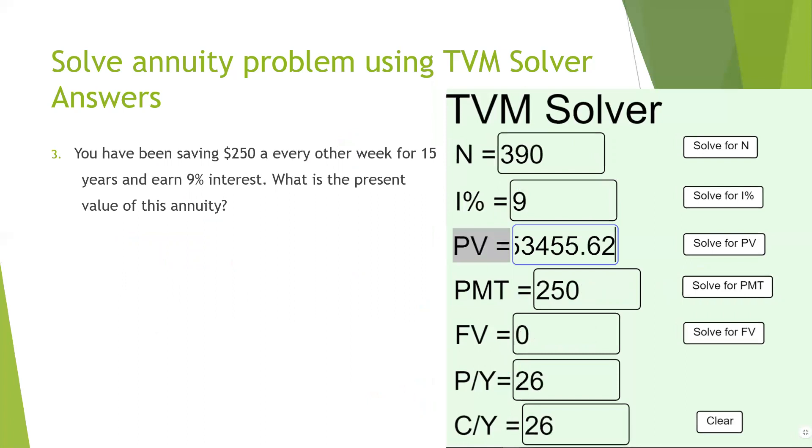Here's the last one. This one is telling us how much we're saving every other week. Every other week means we know that there's 52 weeks in the year, but every other week means we're going to use half of the weeks. So that means we're going to have 26. So we have 26 weeks of the year. That's where these payments per year and compounding per year came from. And we're doing this for 15 years. So 15 times 26 will give us 390.